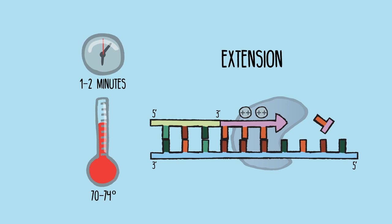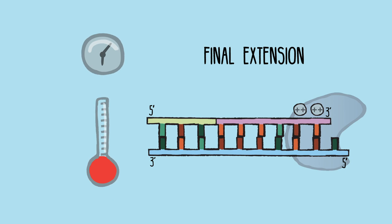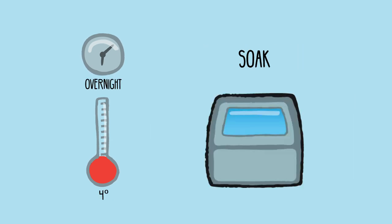This repeats for about 20 to 40 cycles, followed by a final extension, and ends with a hold or soak cycle for stable storage of the PCR product. Let's look at each step in detail.